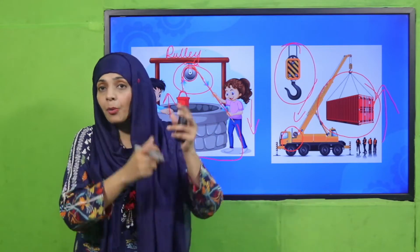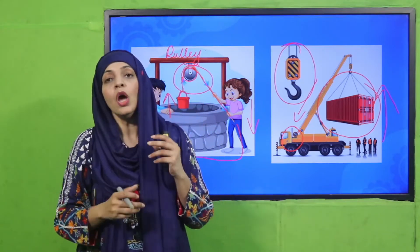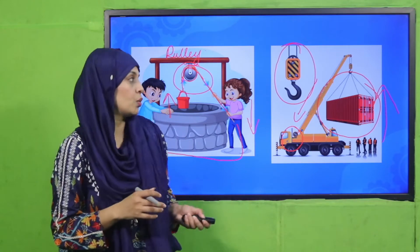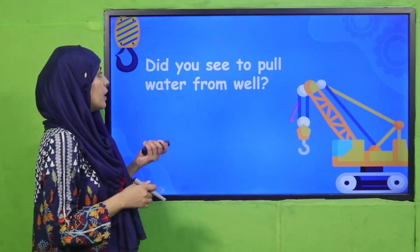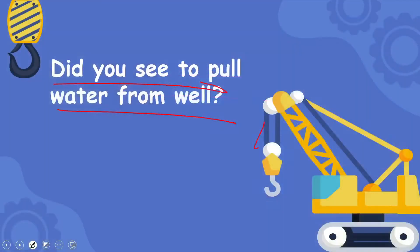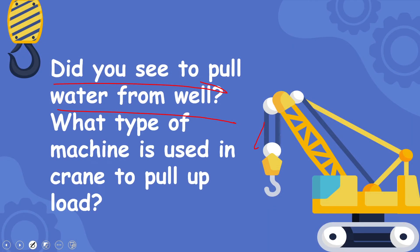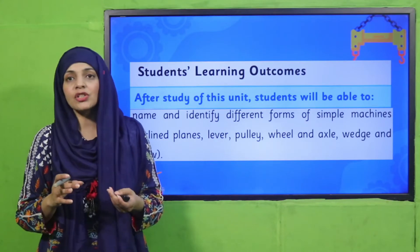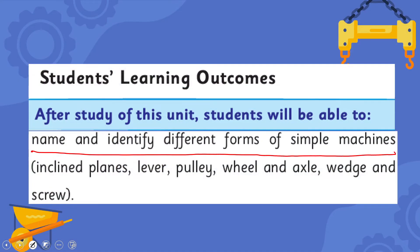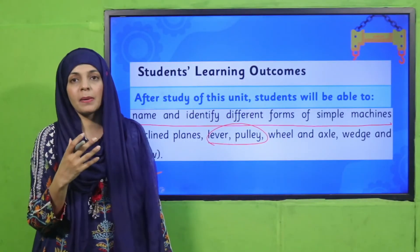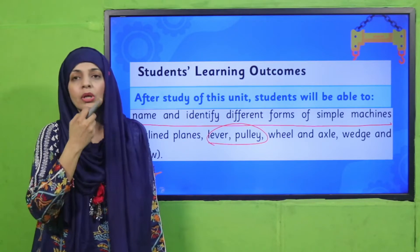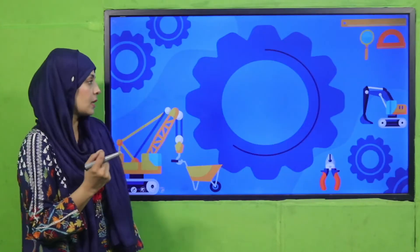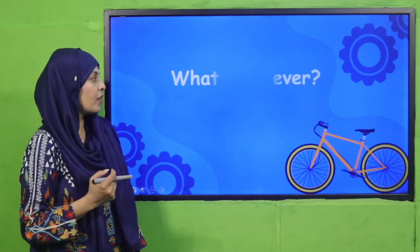Pulleys are used in cranes, wells, and flag poles where we raise flags. Did you ever see someone pulling water from a well? What type of machine is used to pull the load in a crane? That is a pulley. In today's lecture, students will be able to name and identify different forms of simple machines. We have discussed the pulley; now we will talk about the lever, which is also a very simple machine that makes our work much easier.